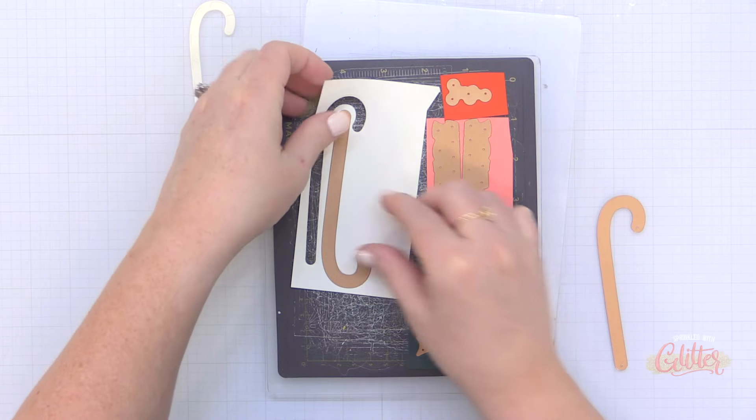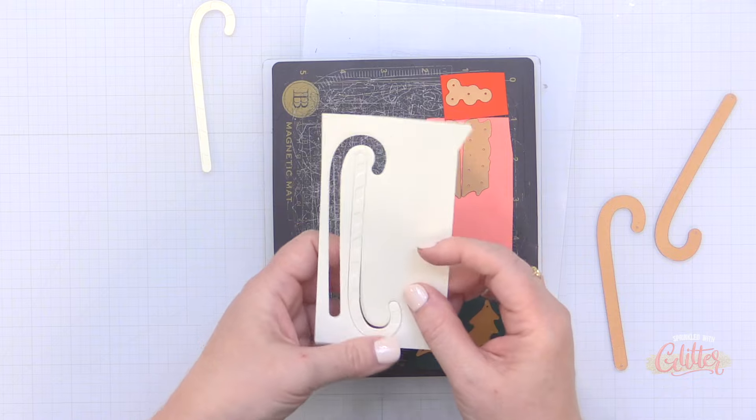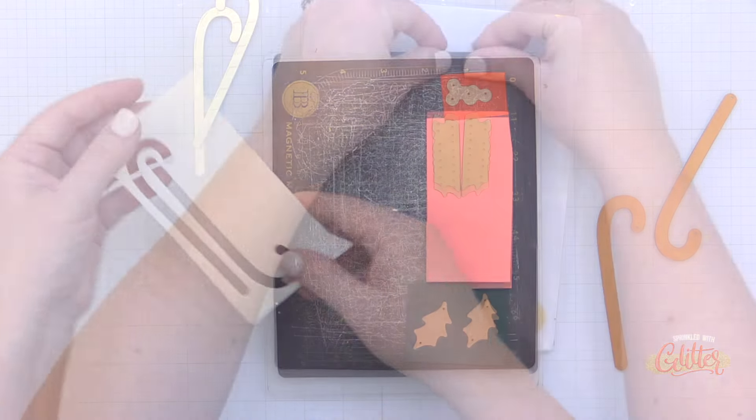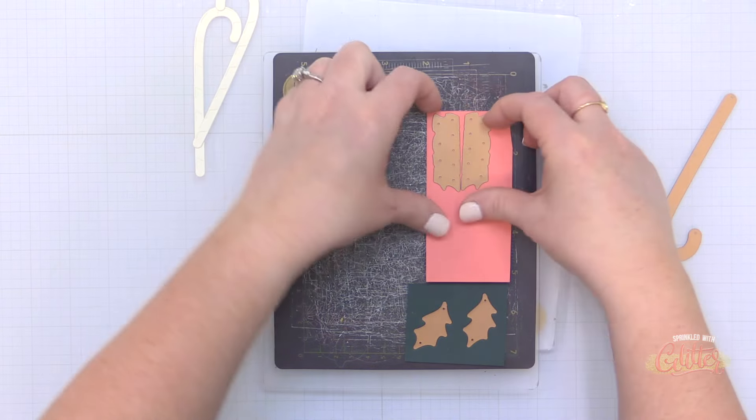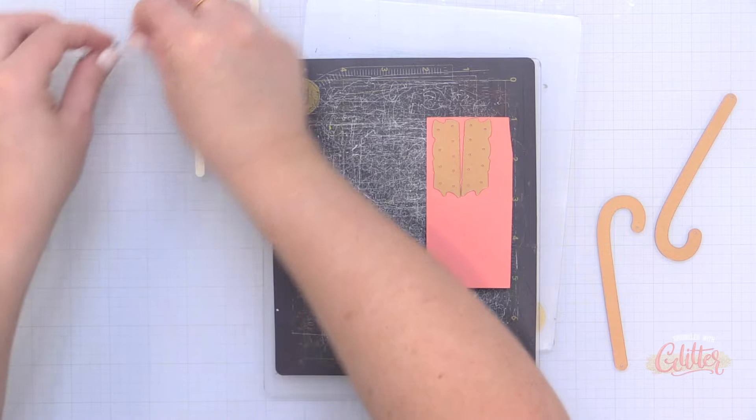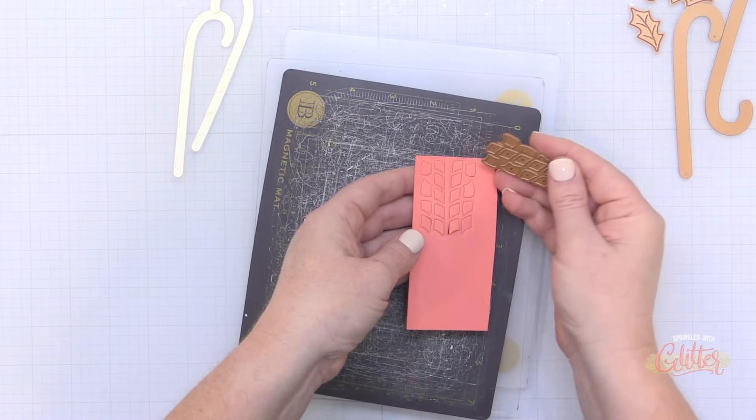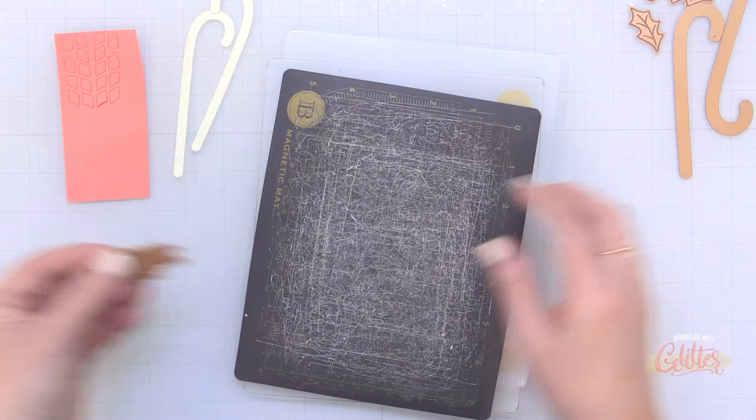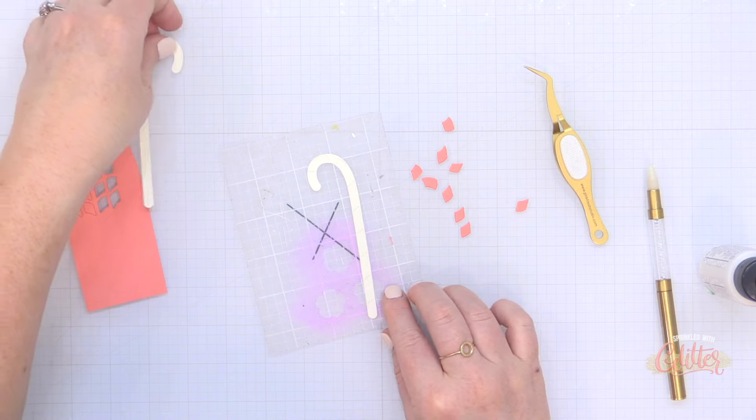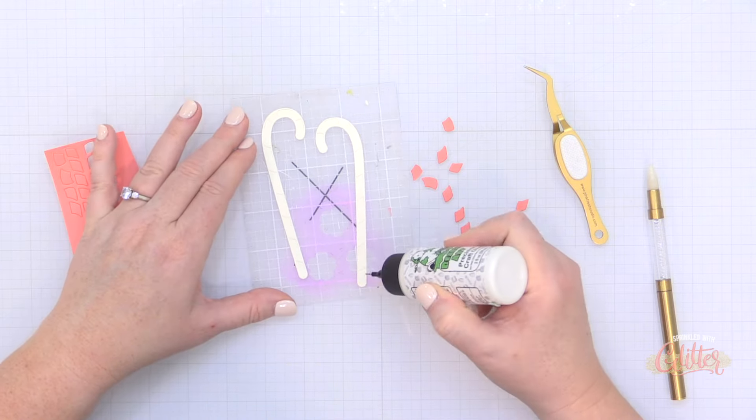Now I am going to go back and die cut these candy canes again from some plain white cardstock a few times and stack them up so that I can add some dimension to these candy canes. But for now I'm just going to sort through all my die cuts and get everything out of the way. Now I will mention I did get a little bit lucky because these stripes of the candy cane stayed inside the cardstock and that allowed me to move them all and keep them in order.